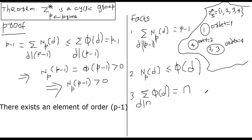First of all, we will make use of an interesting observation: if you take your elements and partition them according to their order — as I am doing here as an example — take z*5, which is made of numbers 1, 2, 3, 4. What are the possible orders of elements of z*5?